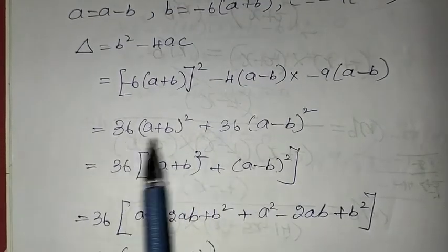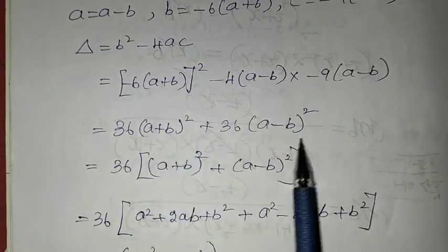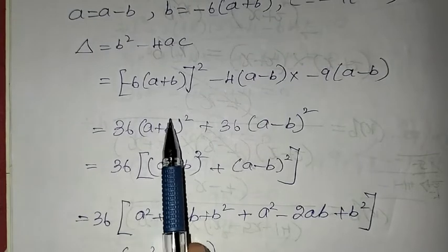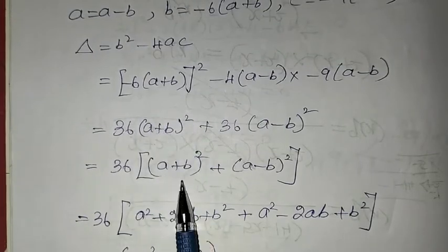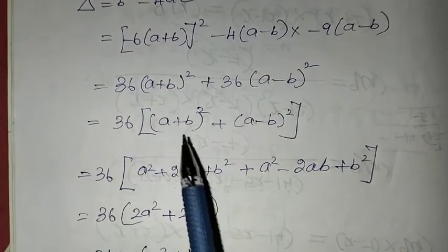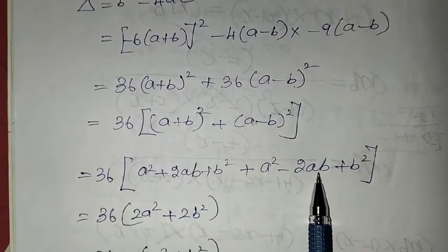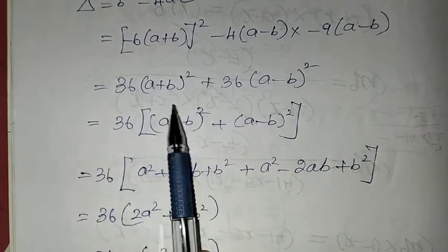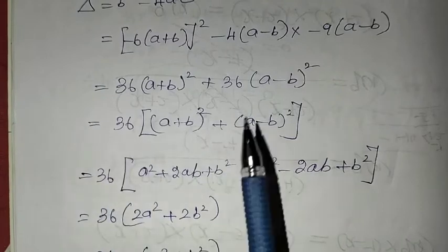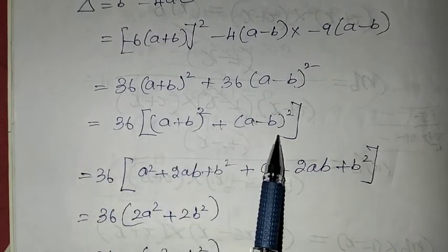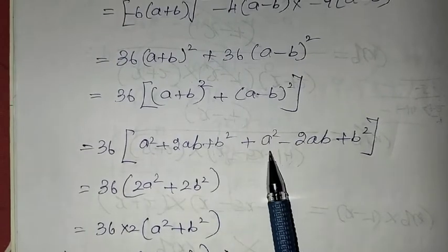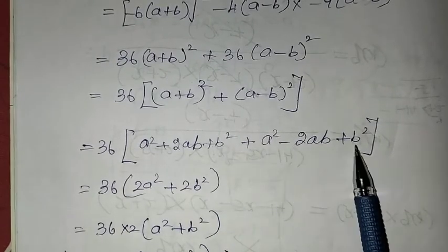We have 36 common in both terms. This term is (a plus b) the whole square and this term is (a minus b) the whole square. We apply the formulas: (a plus b)² equals a square plus 2ab plus b square, and (a minus b)² equals a square minus 2ab plus b square.